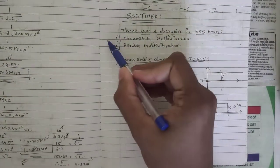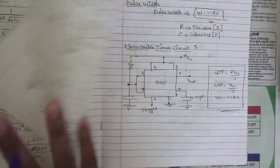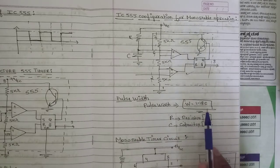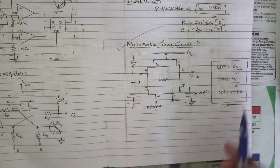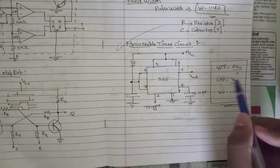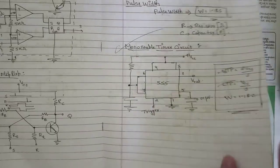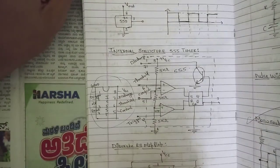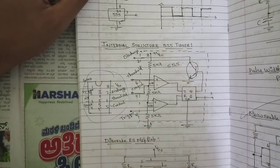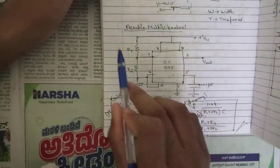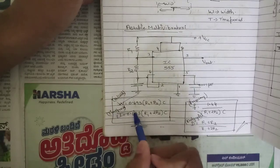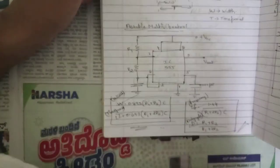From the 555 timer, one question on monostable and astable multivibrators will be asked, including the block diagram and the 555 configuration for monostable operation. The pulse width expression is W = 1.1 × RC. Note the expressions for upper trigger point, lower trigger point, and pulse width. Also note the internal structure of the 555 timer with its 8-pin structure. For the astable multivibrator circuit using a 555 timer, note the pulse width, time period, frequency, and duty cycle expressions.